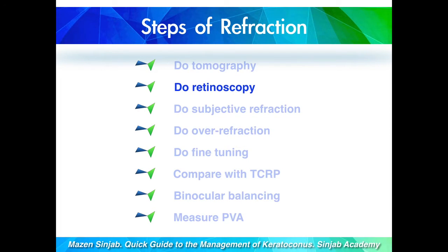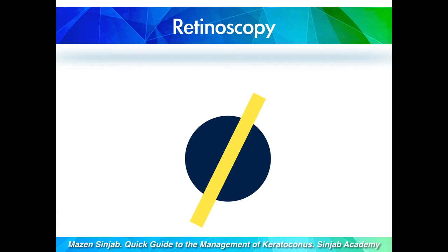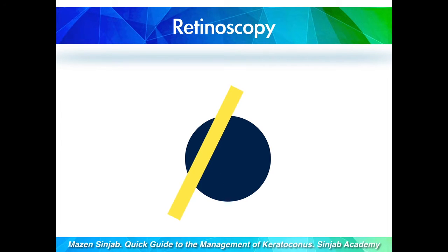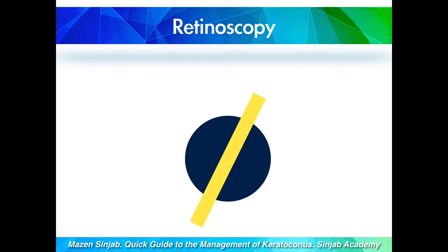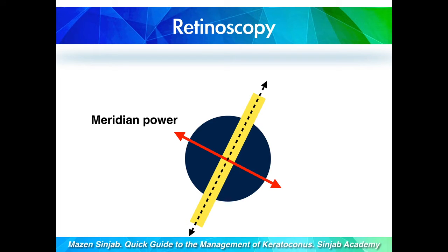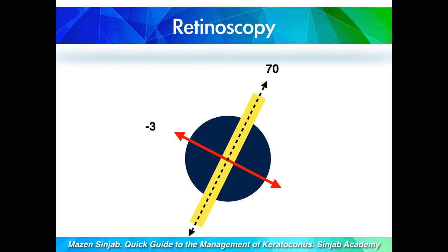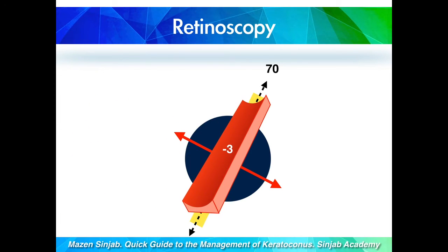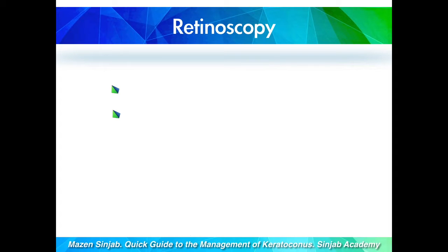In retinoscopy, we measure the power of meridians. When I move the streak of light in a direction, I am reflecting that direction and measuring what is called the meridian power. The axis of the streak by name is the axis of the correcting lens. So for example, if the meridian shows minus 3 diopters and the streak axis is 70 degrees, it is just like using a minus 3 diopter cylinder oriented at 70 degrees to give its effect at that meridian, which is 160 degrees.